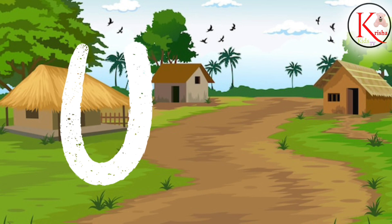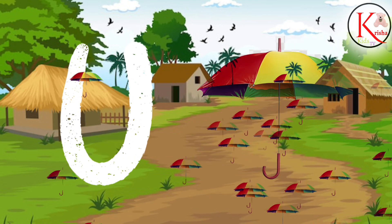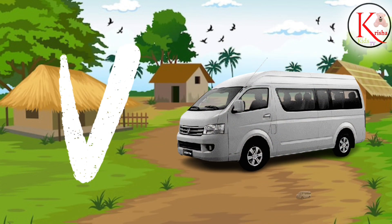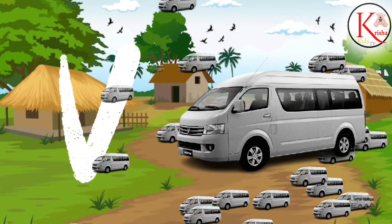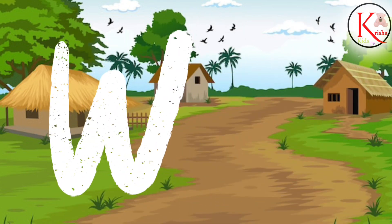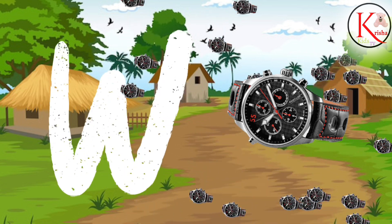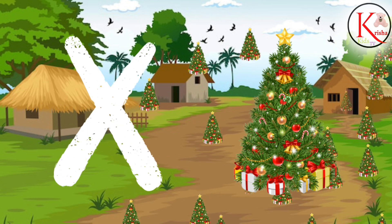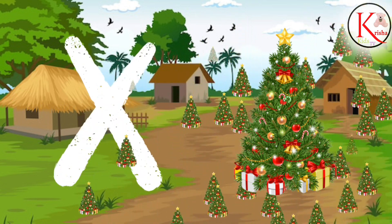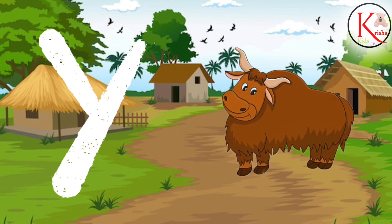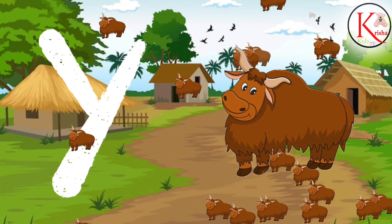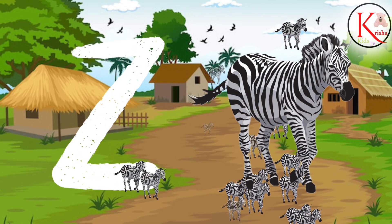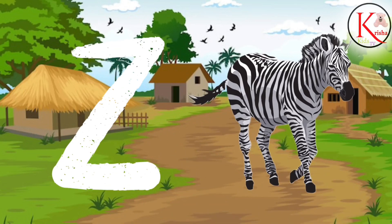U for Umbrella. V for Van. W for Watch. X for X-ray. Y for Yak. Z for Zebra. Thank you, bye-bye!